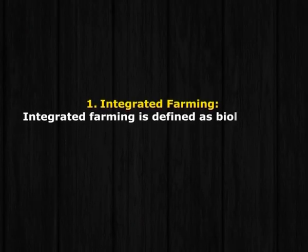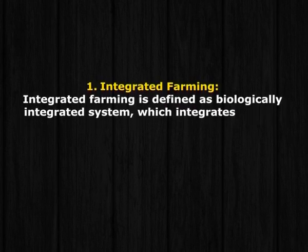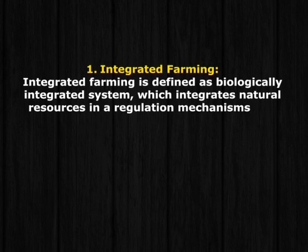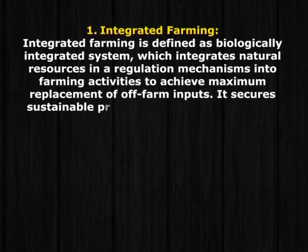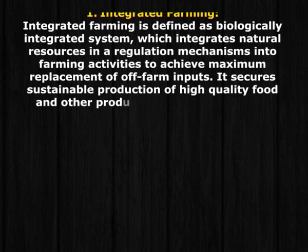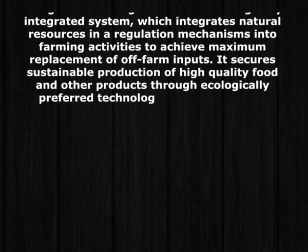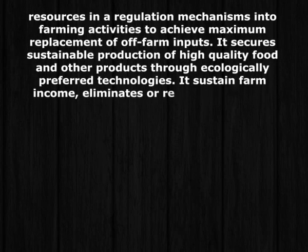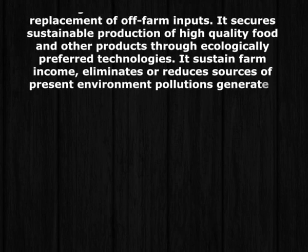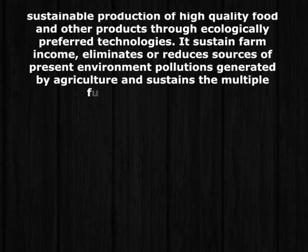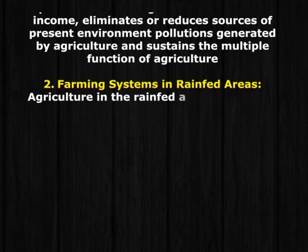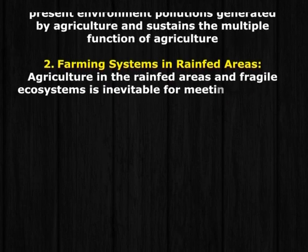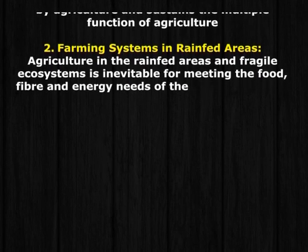1. Integrated Farming System: Integrated farming is defined as a biologically integrated system which integrates natural resources and regulation mechanisms into farming activities to achieve maximum replacement of off-farm inputs. It secures sustainable production of high-quality food and other products through ecologically sound technologies, sustains farm income, eliminates or reduces sources of environmental pollution generated by agriculture, and sustains the multiple functions of agriculture. 2. Farming Systems in Rain-fed Areas: Agriculture in rain-fed areas and fragile ecosystems is inevitable for meeting the food, fiber, and energy needs of the local inhabitants.